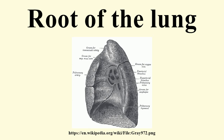The root of the right lung lies behind the superior vena cava and part of the right atrium, and below the azygos vein. That of the left lung passes beneath the aortic arch and in front of the descending aorta. The phrenic nerve, pericardiac or phrenic arteries and veins, and the anterior pulmonary plexus lie in front of each, and the vagus nerve and posterior pulmonary plexus lie behind.